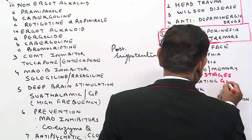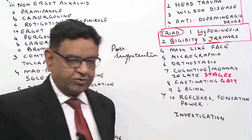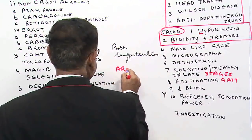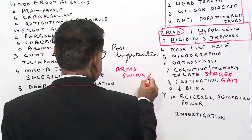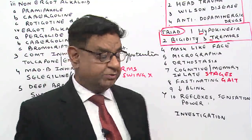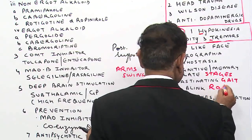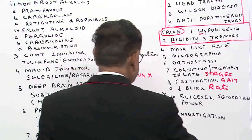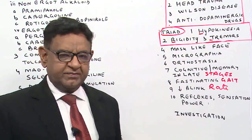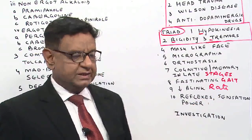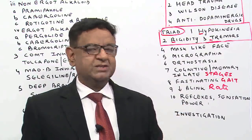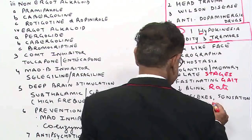Festinating gait is there — the patient has a forward bending posture and arm swing is not present. Blink rate is reduced in these patients. One very interesting point to remember: although the patient has lots of problems, deep tendon reflexes are normal, sensation — pain, touch, temperature — is normal, and muscle power is normal.